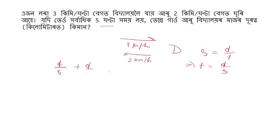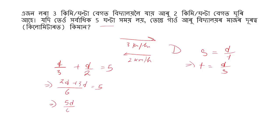The second time is d by 2 equal to 5 hours. So if you write a code of 3200, then 3200 is twice d plus 3200 is thrice d equal to 5. So 5d by 6 is equal to 5.